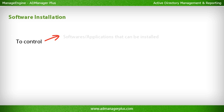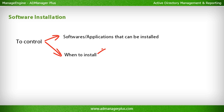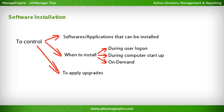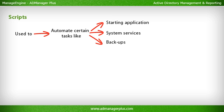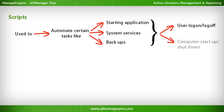Software Installation settings are used for users and computers to control the applications or programs they can install, when to install them — during logon, on start, or on demand — and also for upgrading applications, applying patches, or removing unwanted applications. Scripts are used to automate certain tasks or activities like starting application or system services, backups, etc., at user logon or logoff, and startup or shutdown of computers.